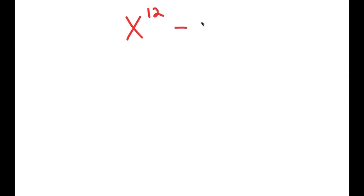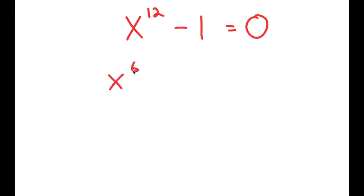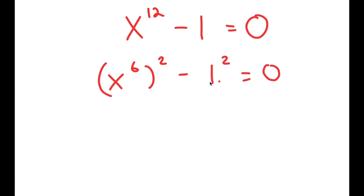In this video, I'm going to solve the equation x to the power of 12 minus 1 is equal to 0. To solve this, I'm going to first rewrite this as x to the power of 6 to the power of 2 minus 1 squared is equal to 0.